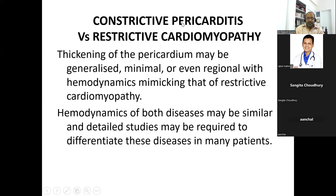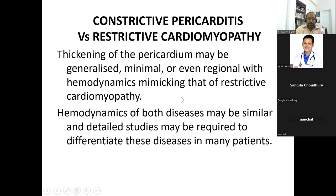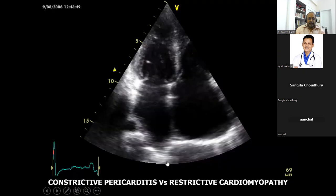In constrictive pericarditis, we have a thickened pericardium — it could be generalized, minimal, or reasonable — but it must have hemodynamic features affecting the pericardium, resulting in significant respiratory variations. However, these closely mimic restrictive cardiomyopathy. The hemodynamics of both diseases may be similar, and detailed studies are required to differentiate these two entities.